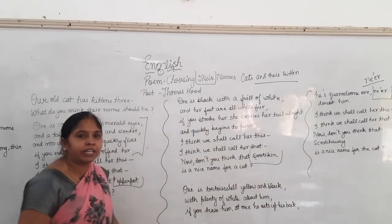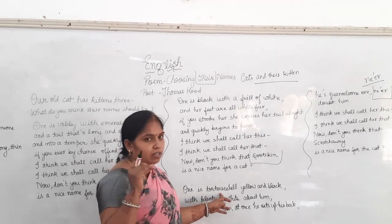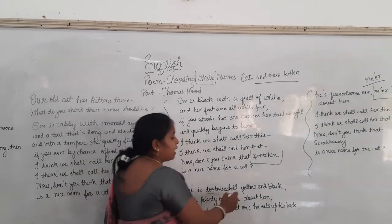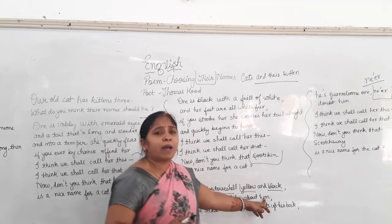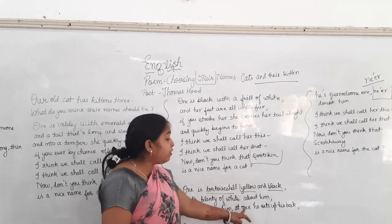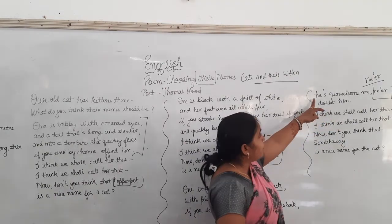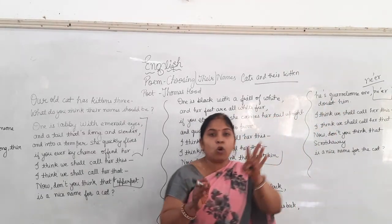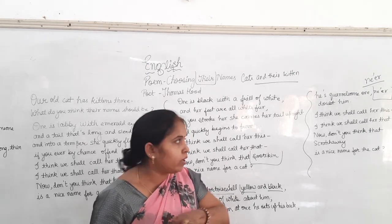After the discussion of the qualities of the third kitten, the color of the third kitten is brown — yellow and black like the shell of a tortoise, which is brown. With plenty of bites about him, and on his body the bits of white colour are also there. If you tease him, if you irritate him, if you annoy him, at once he sets up his back — he would become very angry. He is quarrelsome, meaning he is very good at quarreling with others. Never doubt him — there is no doubt that if you annoy him, he will not forgive you.